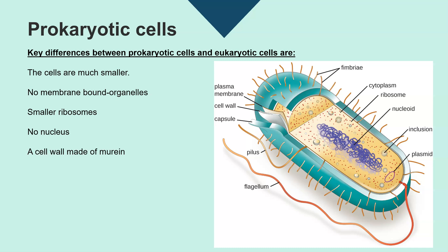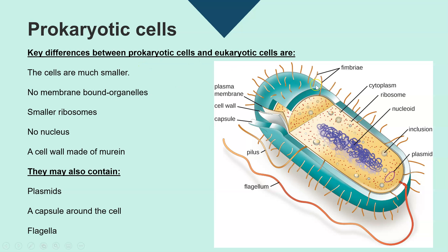They have a cell wall but it's made of a different chemical called murein. Sometimes they could also contain plasmids, a capsule around the cell, and flagella. We've got an example of a prokaryotic cell here — this is a particular type of bacteria, though not all bacteria look like this, but bacteria are our key example of prokaryotic cells.